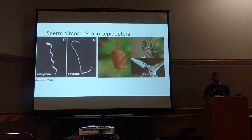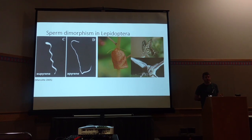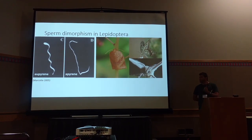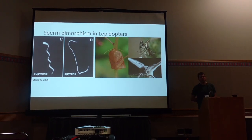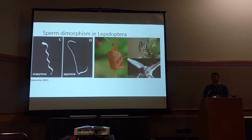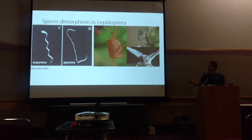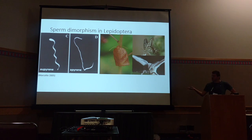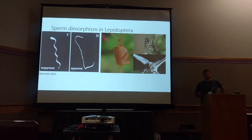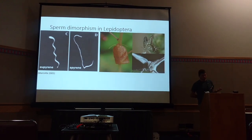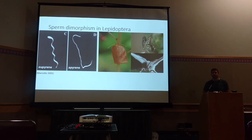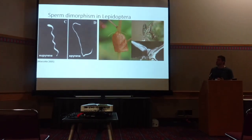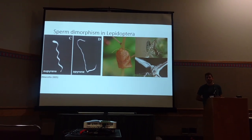Apyrene sperm lacks any nuclear DNA, so obviously it can't fertilize eggs, but it's produced under strict hormone control, and males transfer 10 to 20 times as much of this anucleated sperm as nucleated sperm when they mate with females. It pretty clearly has some role in reproduction, although what that is isn't really clear, and my dissertation generally focuses on trying to understand this dimorphism and what the role of anucleated sperm might be.